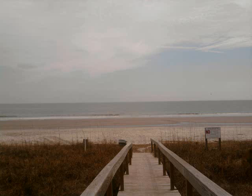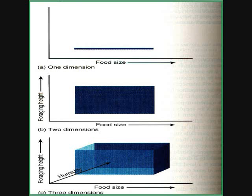Now we have a graph talking about food size. If a realized niche has one dimension — say food size — only food size matters, so it's defined by one dimension. If food size and foraging height matter, that's defined by two dimensions, which would be a box instead of a line. And if food size, humidity, and foraging height all matter, that's defined by three dimensions. A realized niche can have a lot of dimensions.